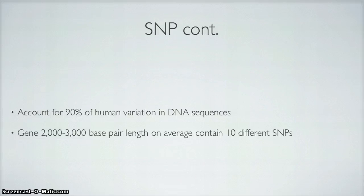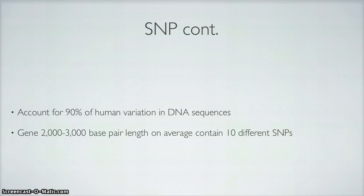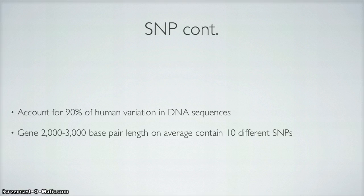Single nucleotide polymorphic changes account for 90% of human variation in DNA sequences. For every 2,000 to 3,000 base pairs of a gene, on average it contains 10 different single nucleotide polymorphic changes. So that's about 10 changes over 2,000 base pairs, roughly 1 in 200.